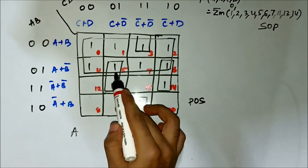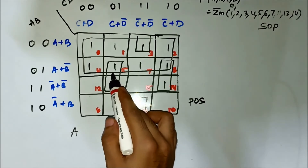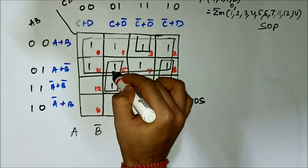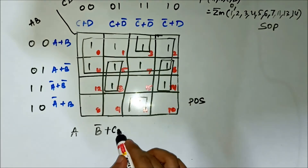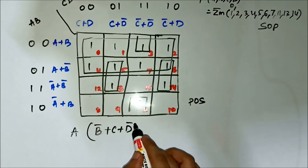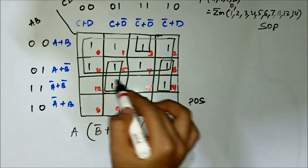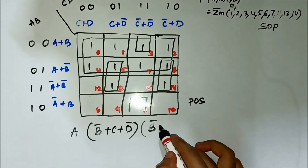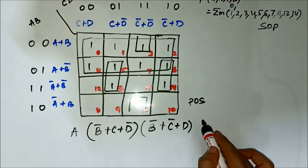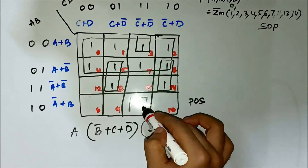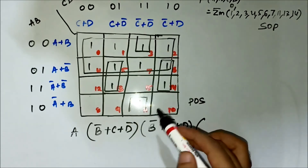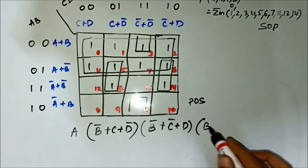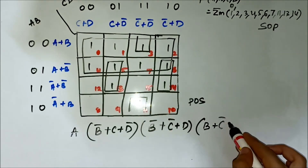For the next pair, on the horizontal side we have B bar common, and on the vertical side we have C plus D bar common. For the pair involving cells 3 and 11, on the vertical side we have C bar plus D bar common, and on the horizontal side we have B common. So it is B or C bar or D bar.